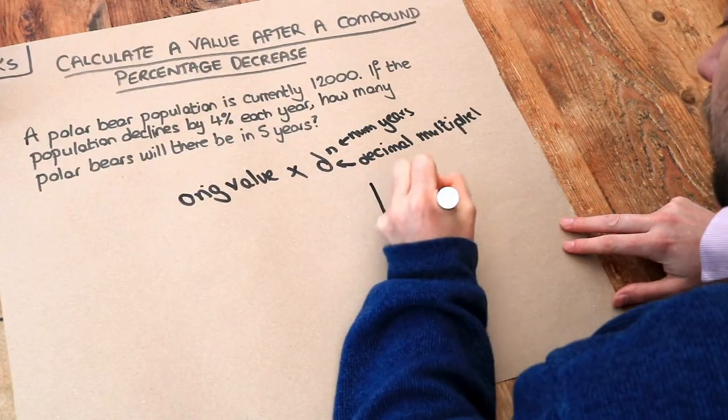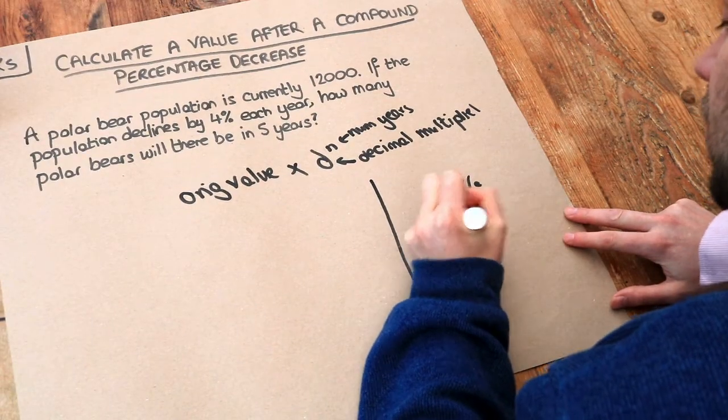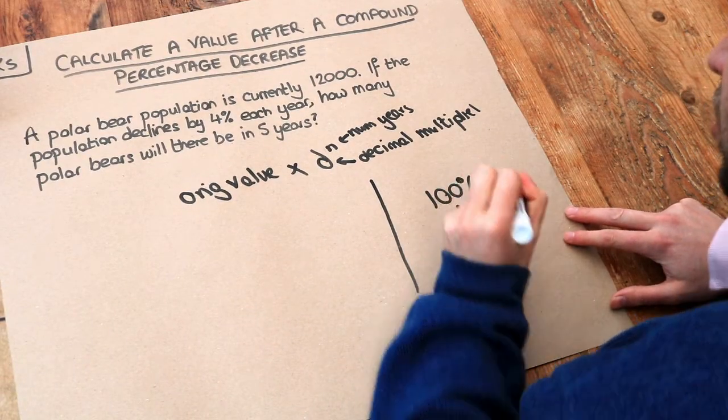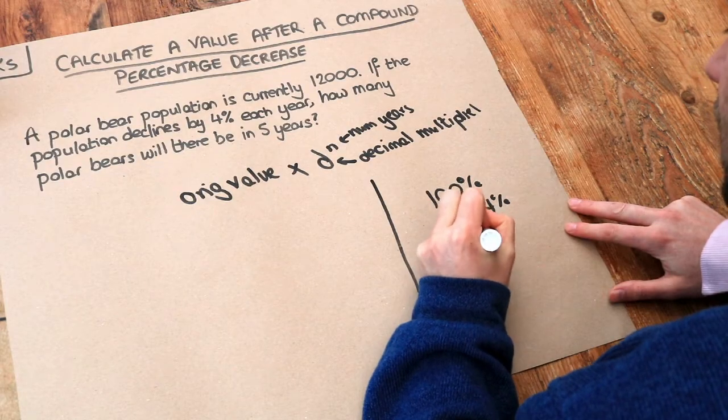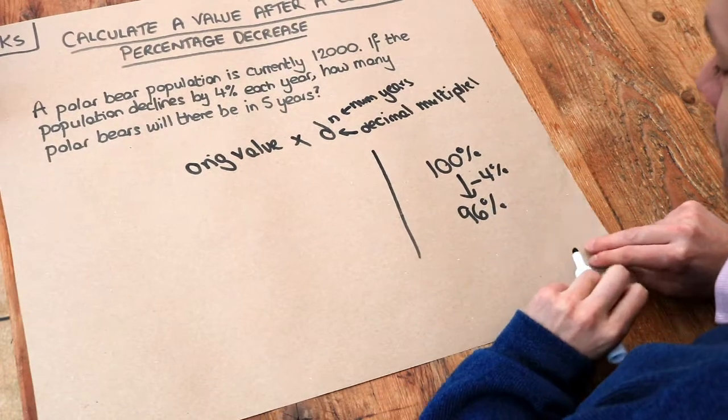Now if you think about this, everything starts 100%. Now if it was to decrease by 4%, the population would now be at 96% of its value. So slightly less than what it originally was.